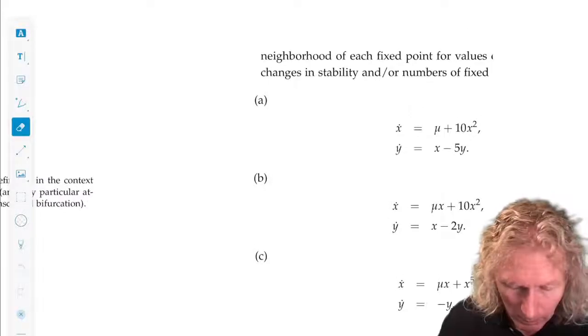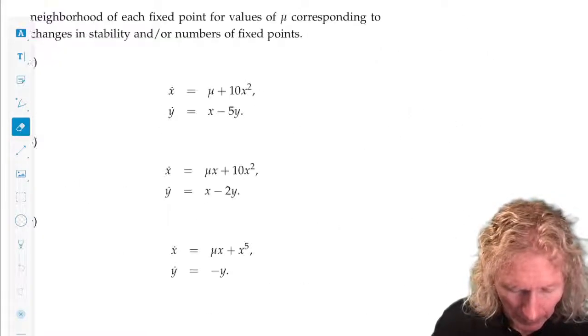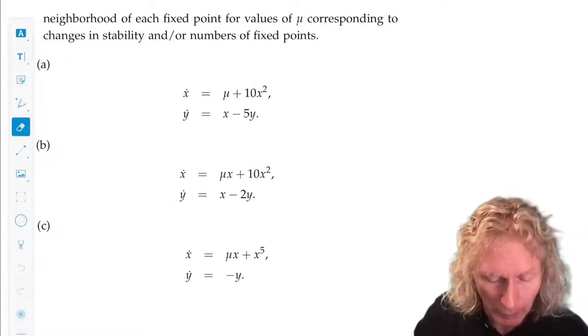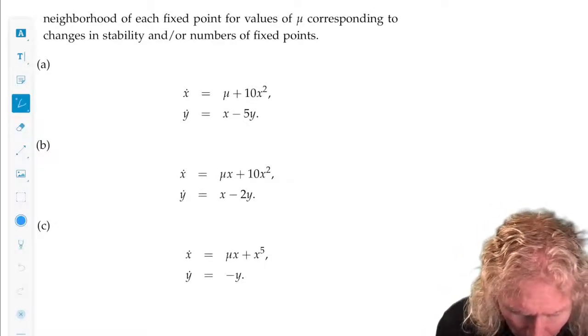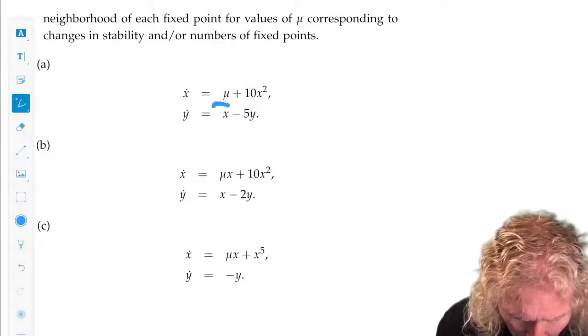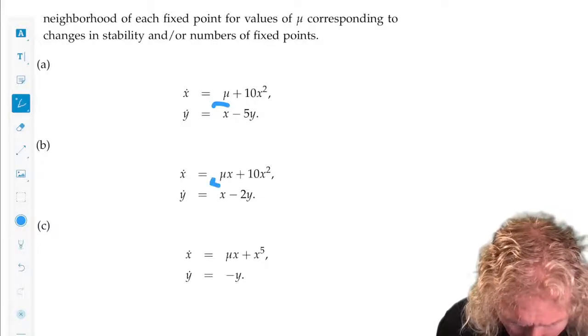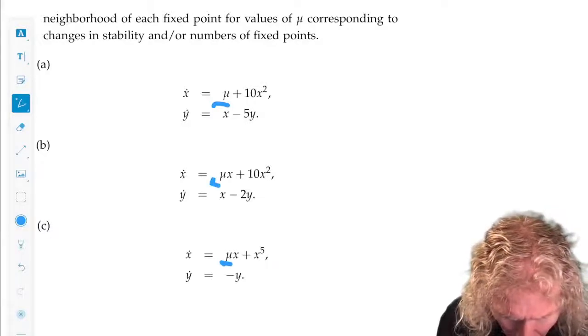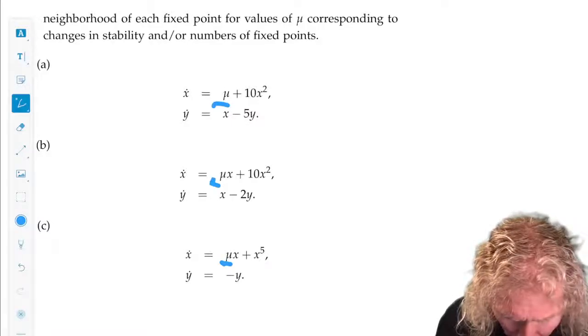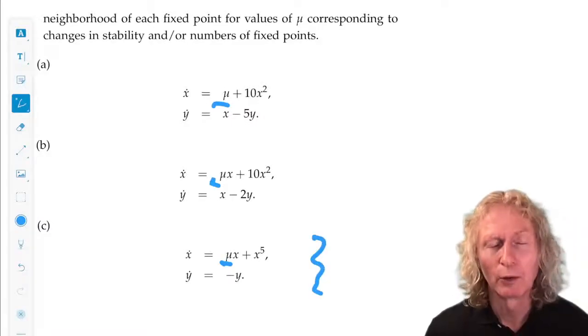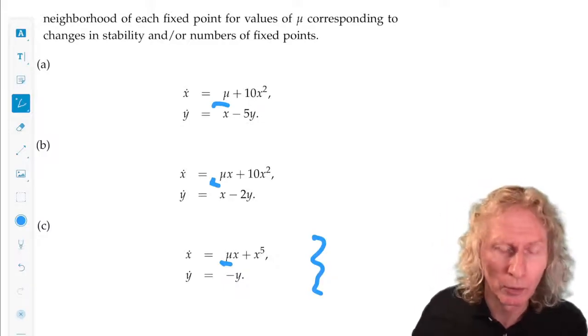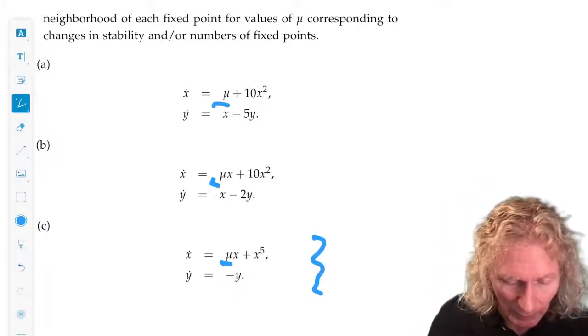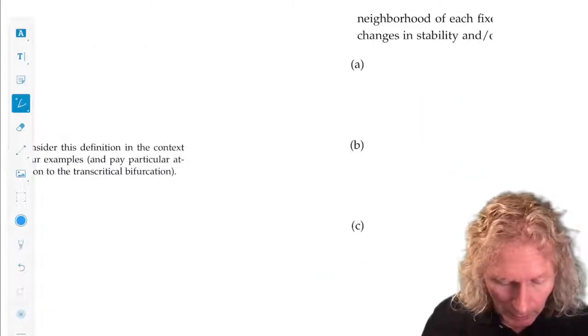Okay, so there are three vector fields in the plane, autonomous vector fields in the plane. Each one of them depends upon a parameter. And only C is one of these vector fields that is decoupled in the way I've often given them as examples in this course.